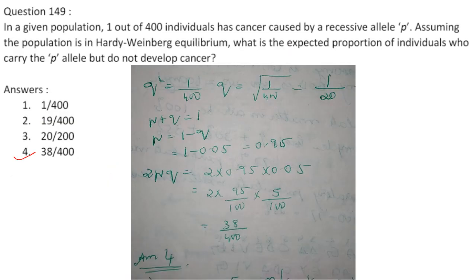In a population, 1 out of 400 individuals have cancer caused by a recessive allele. Assuming Hardy-Weinberg equilibrium: q² = 1/400, q = 1/20 = 0.05; p = 1 − 0.05 = 0.95. Carrier proportion (2pq) = 2 × 0.95 × 0.05 = 38/400. Answer is option 4.